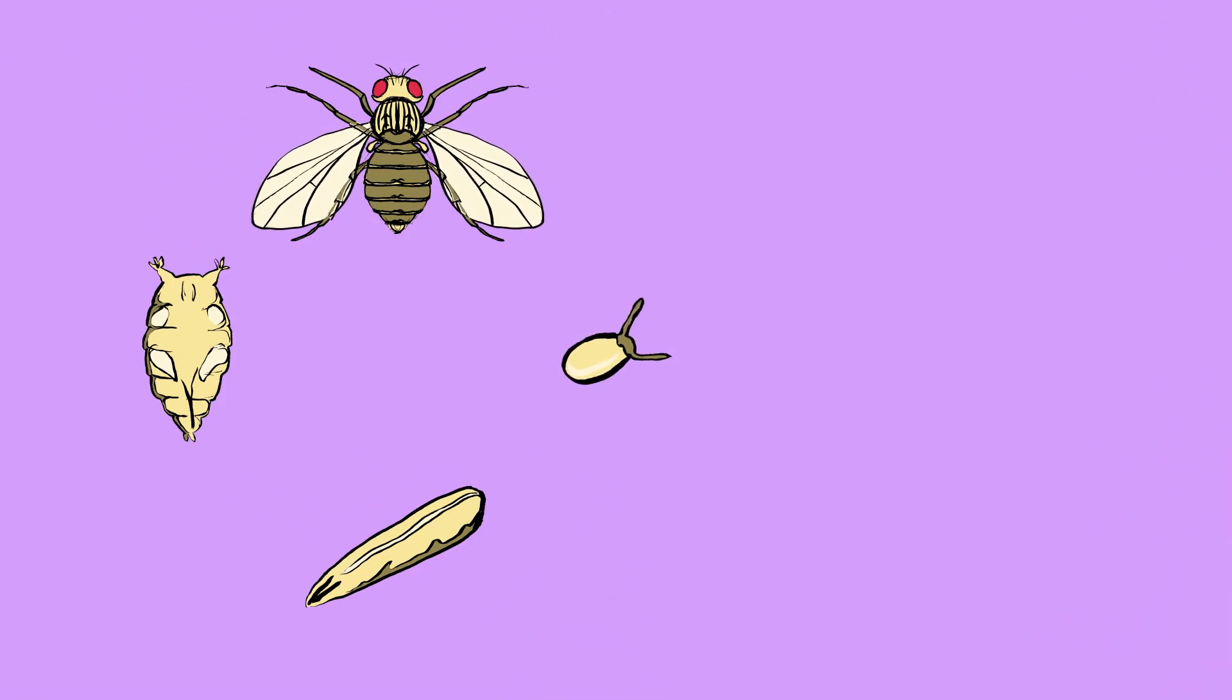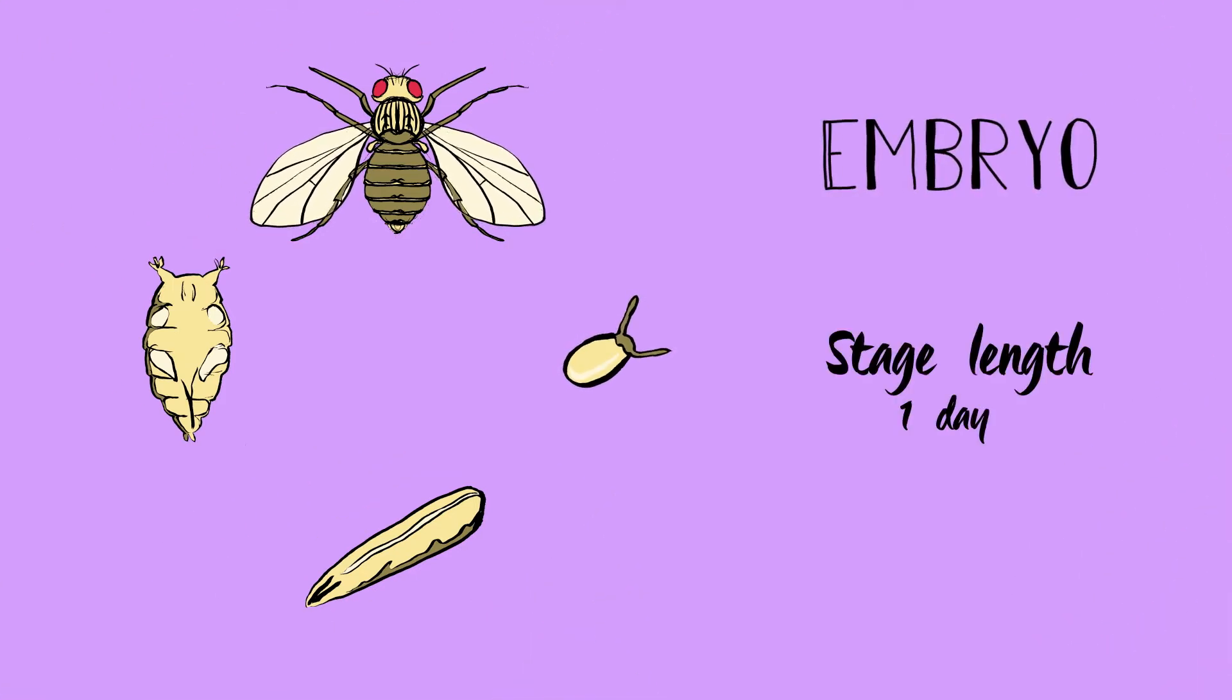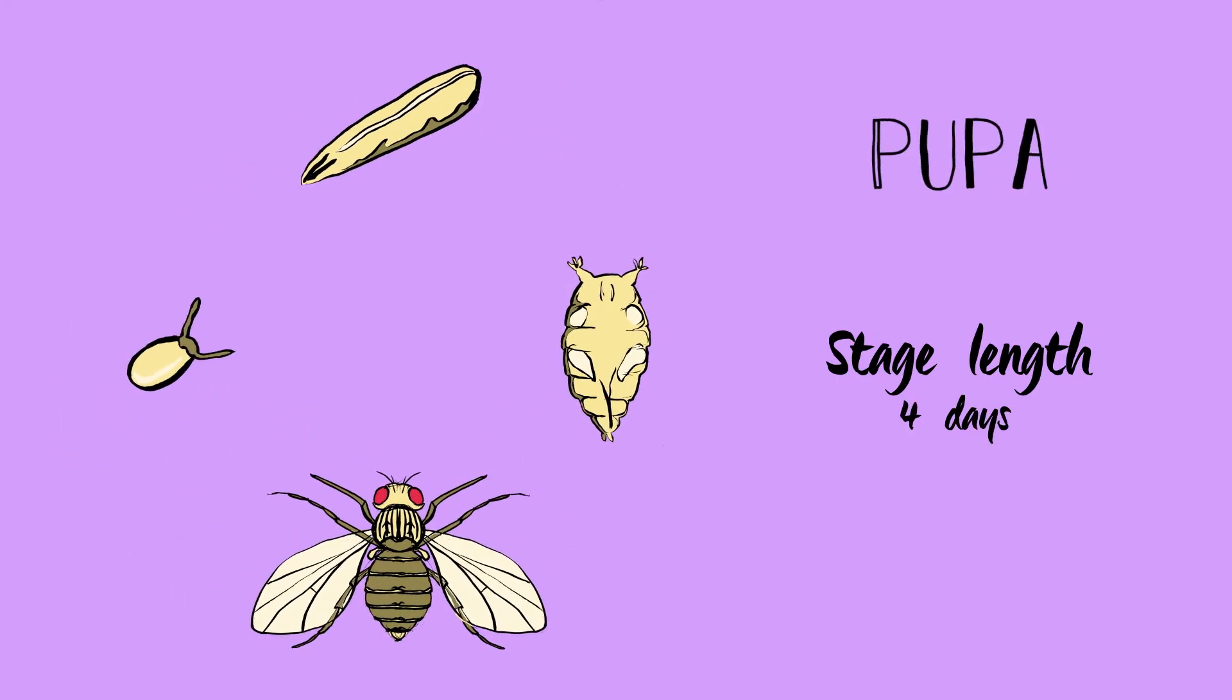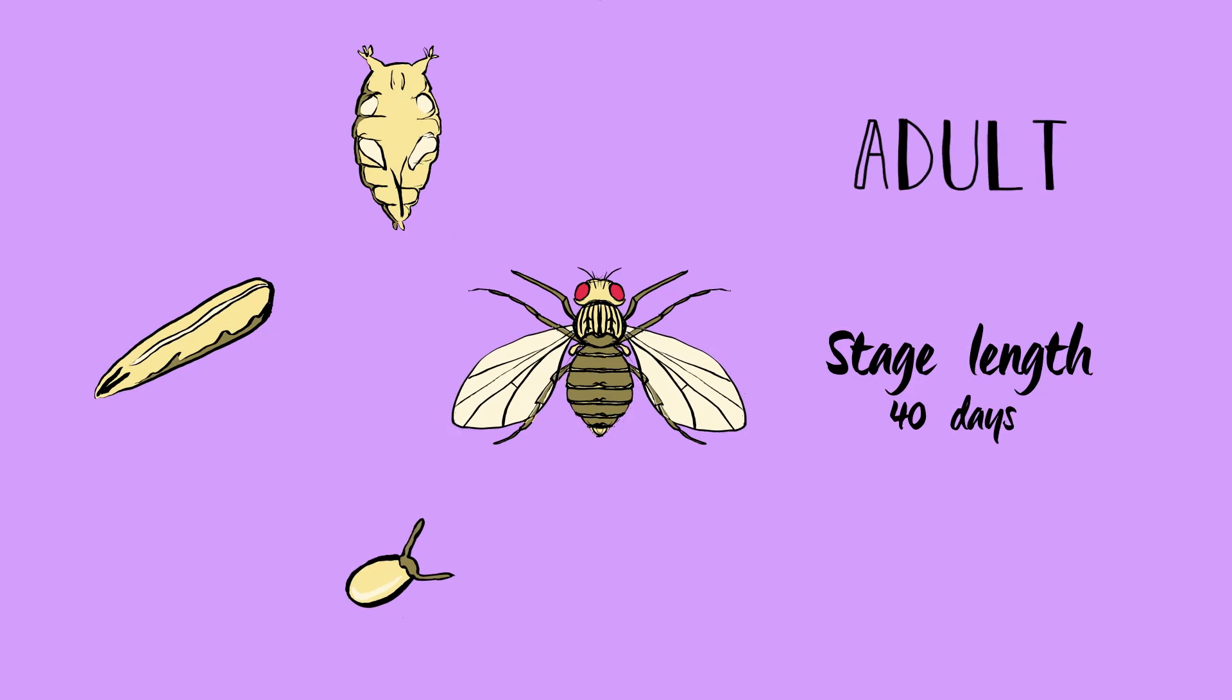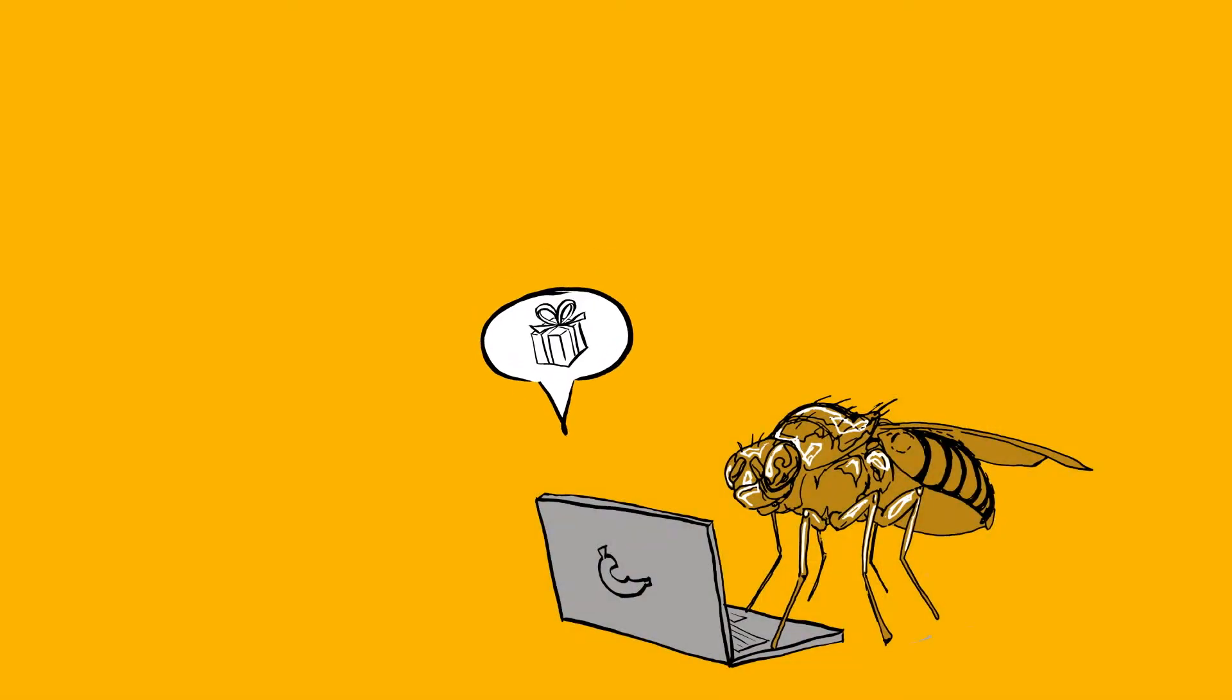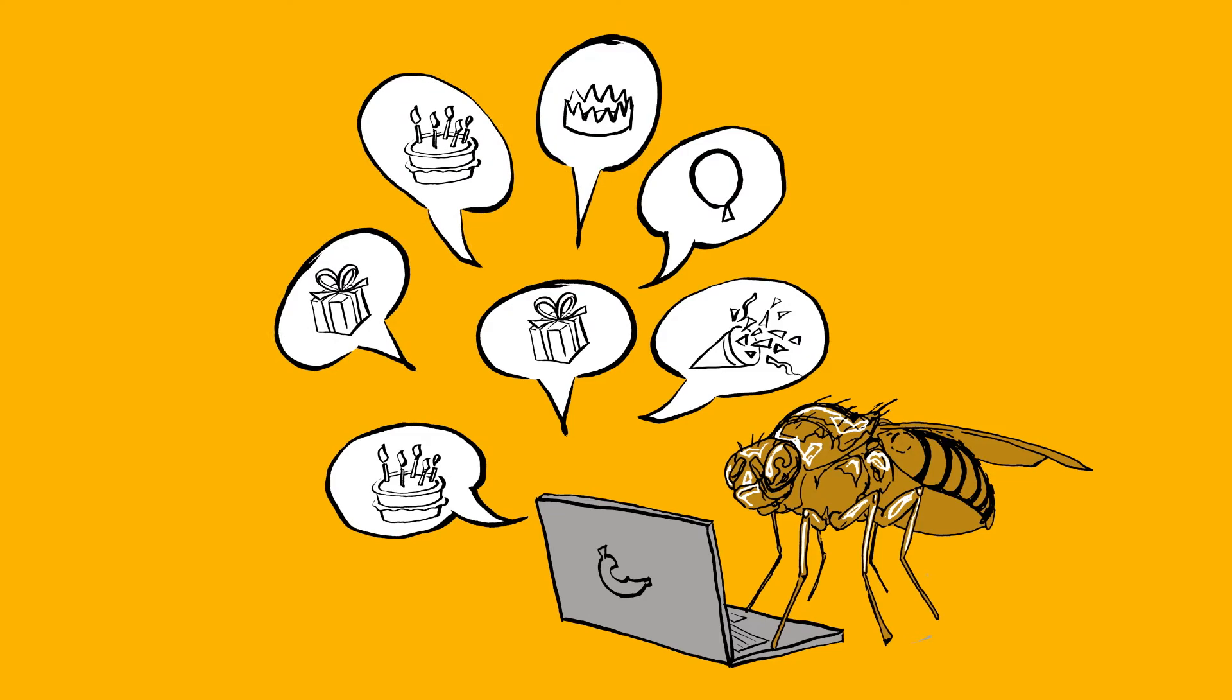Female Drosophila can lay around 100 eggs per day. These hatch into larvae. The larva turns into a pupa. Eventually, it transforms into an adult fly in a process known as metamorphosis. Drosophila can become grandparents in as little as 20 days. That's a lot of birthday notifications.